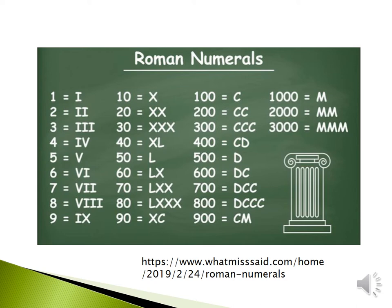X is 10, XX is 20, L is 50, C is 100 — remember 'century' — D is 500, and M is 1000 like 'millennium.' You will notice the M there. These are the Roman numerals and their numerical values.